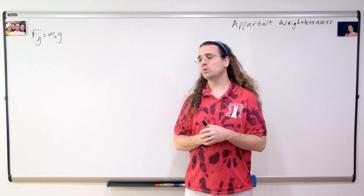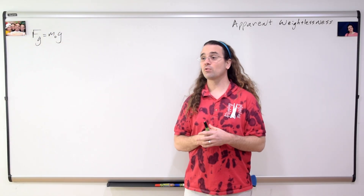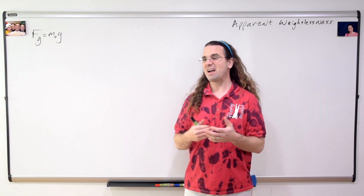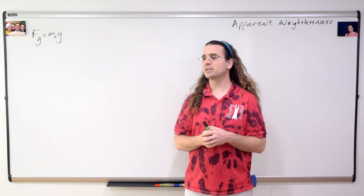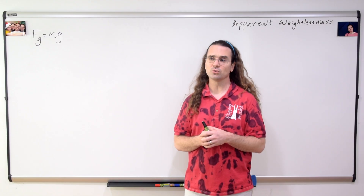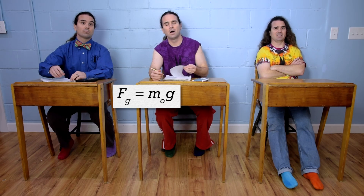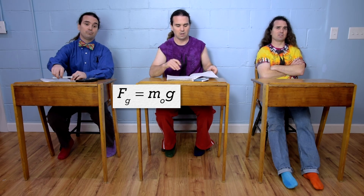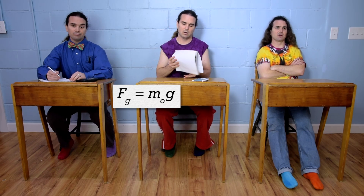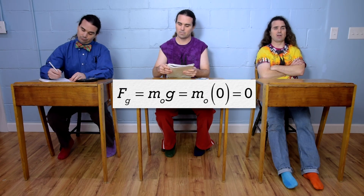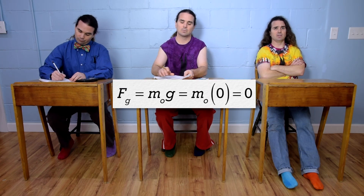Bo, what would be necessary for the weight or the force of gravity acting on an object to be equal to zero? The mass of the object is not going to be zero, so the acceleration due to gravity would need to be zero.